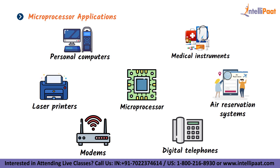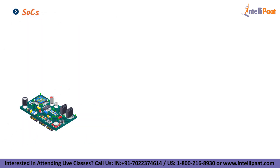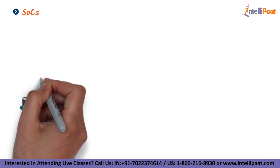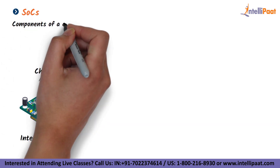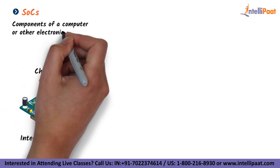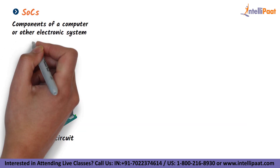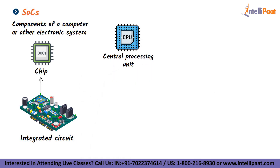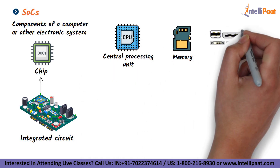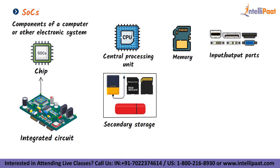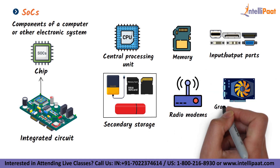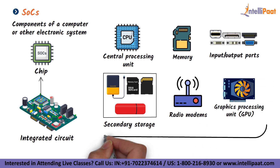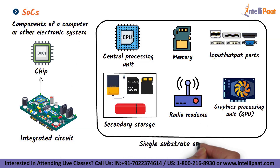Lastly, let's talk about SoCs. An integrated circuit — sometimes known as a chip — that integrates all or most of the components of a computer or other electronic system is known as a system on a chip, or SoC. A CPU, memory, input-output ports, and secondary storage are nearly always included, along with other components like radio modems and a GPU, all on a single substrate or microchip.